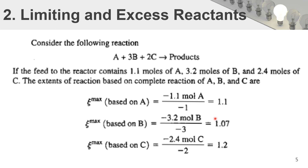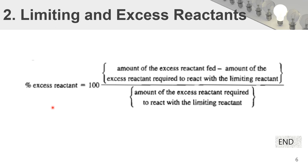A question may arise: how much extra amount of excess reactant are we adding to the system? To find that, we use the percent excess reactant relationship, which relates the extra amount of reactant added to the amount required as per the balanced chemical equation. With this relationship we can calculate how much excess reactant has been added. We will see a further example for limiting and excess reactants in our next video.